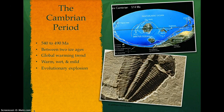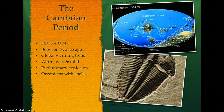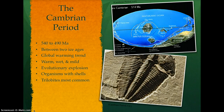There was an evolutionary explosion, including the appearance of organisms with shells and exoskeletons. The most common fossil of the Cambrian period is the Trilobite. Rodinia fragmented during this time, and land masses were located away from the poles.